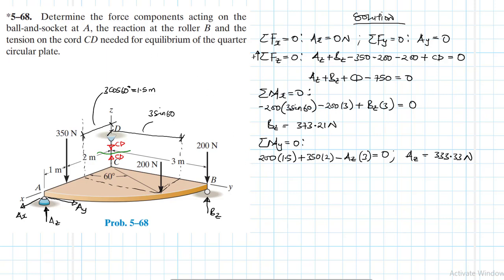So finally, using this equation, this one here, let's calculate CD since we already know what AZ is and BZ. We can calculate CD, which is the tension in the cord CD. So our CD is going to be equal to, our CD will be equal to, our AZ, we said it's 333.33 plus BZ is 373.21 and then minus 750. So we get CD equal to 43.46 newtons.